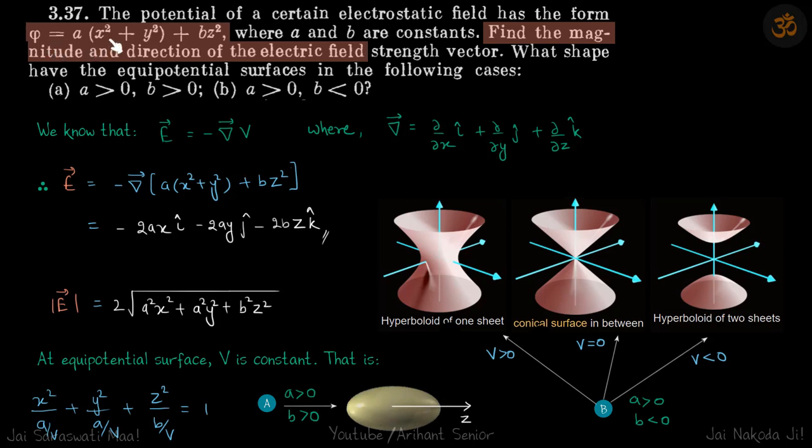We are given potential as a function of x, y, and z and we need to find the electric field and the shape of the equipotential surfaces. So we'll do minus del V, and we'll get the electric field and we can find the magnitude from here. Now at equipotential surfaces, potential is constant, so in this equation...